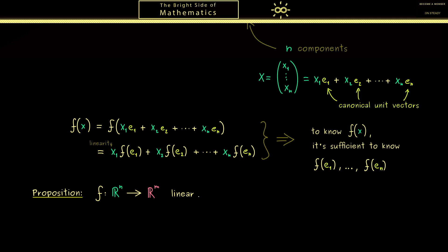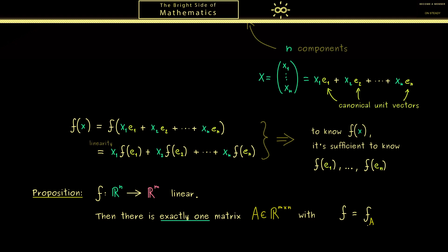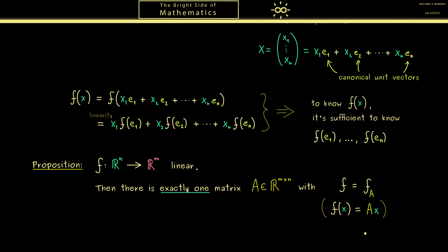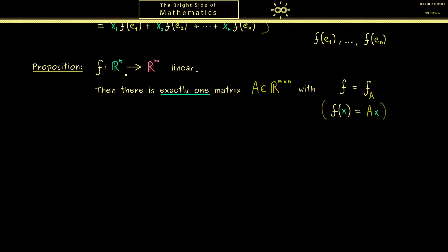To formulate the proposition: assume we have a linear map from Rⁿ into Rᵐ. The claim is that there is exactly one matrix A with m rows and n columns. Recall from the last video that each such matrix A induces a linear map fA, and the meaning of our claim is that our linear map f is exactly fA — so to calculate f(x) you can just multiply matrix A with vector x. In summary, there is exactly one such matrix A such that this equation holds for all vectors x in Rⁿ.